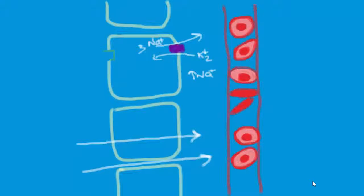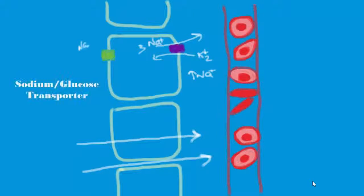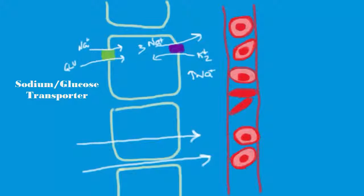If we look to the apical membrane, we see the same type of sodium co-transporter that we saw in the digestive system. This is a secondary active transport system that rides on the back of the huge concentration gradient that sodium has. The movement of sodium into the cell along its concentration gradient drives these carrier proteins. In our example, we see the co-transport of glucose.